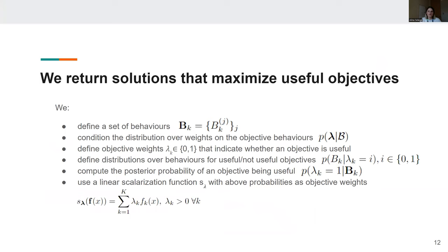And so our algorithm has the following steps. We define a set of behaviors and in our work we use the three behaviors I just introduced. We then condition the distribution over scalarization weights on the objective behaviors. So we ended up with a distribution P of lambda given the calligraphic B, where the calligraphic B is the set of all behaviors across all of our heuristic objectives.